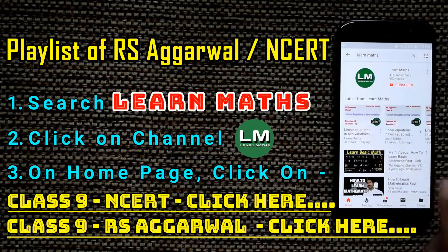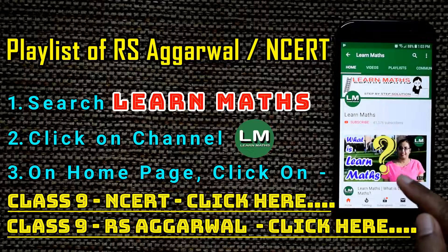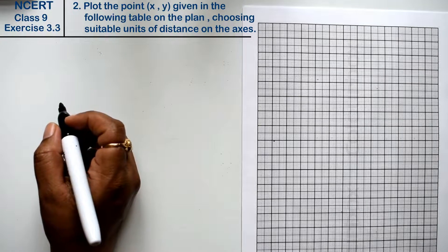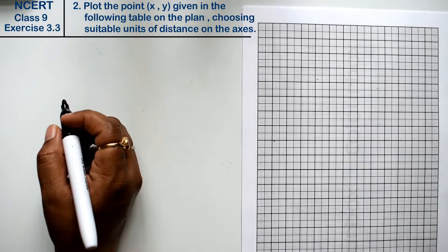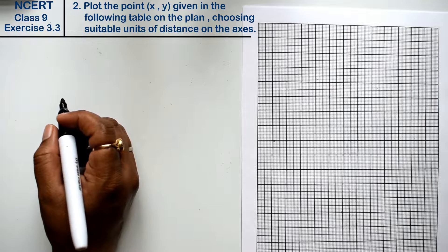Let's do question number 2 of exercise 3.3, that is coordinate geometry. Question number 2 is plot the point (x, y) given in the following table on the plane, choosing suitable units of distance on the axes.